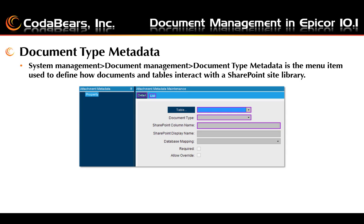The Document Type Metadata screen is found under Document Management, Document Type Metadata. This screen is used to define how documents and tables interact with a SharePoint site library. You'll define all the different values as they relate to SharePoint for a specific table in Epicor, including the SharePoint column names, display name, and the database mapping. You can also check the allow override checkbox to allow the user to override the metadata before it's saved to the SharePoint site.